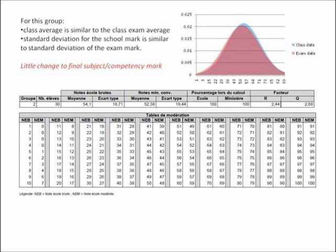Taking the four main pieces of data — the average and standard deviation for both the school marks and the exam marks — we can create two bell curves that provide a visual representation. You can see much more quickly by looking at the curves, rather than the table, that moderation had very little effect on this grouping. The averages are very similar, and you'll notice throughout these tables that the average of the school mark becomes the average of the exam. The standard deviation is also quite similar, so those marks changed very little.